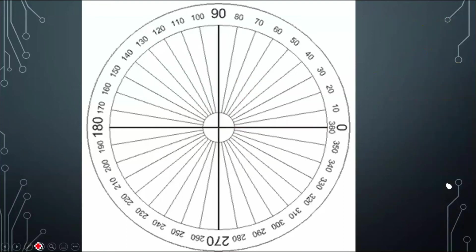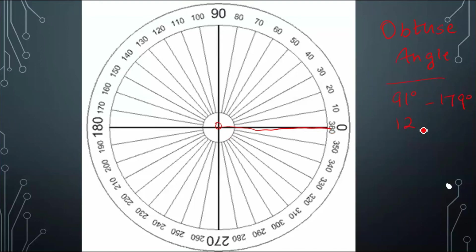Now let's make an obtuse angle. An obtuse angle can be anything ranging from 91 degrees to 179 degrees. Let's mark out our vertex, put the first ray at zero, and put the second ray where we want it to be. I want a 120 degree angle, so let's put our second ray at 120 degrees. This angle over here is exactly a 120 degree angle.